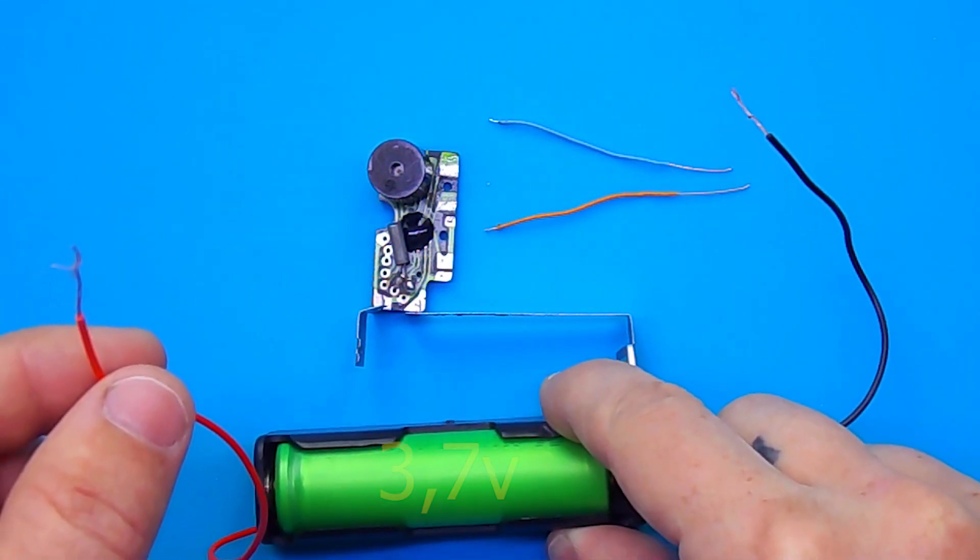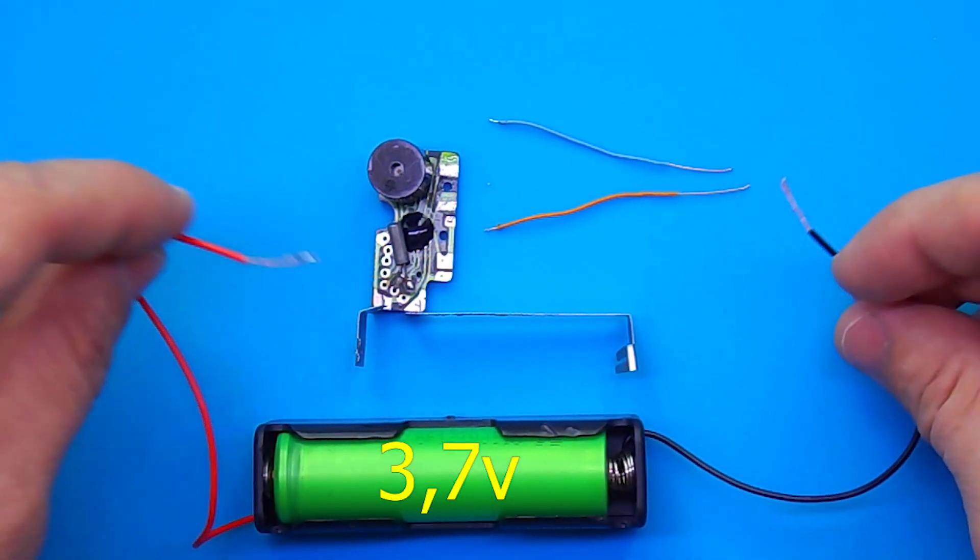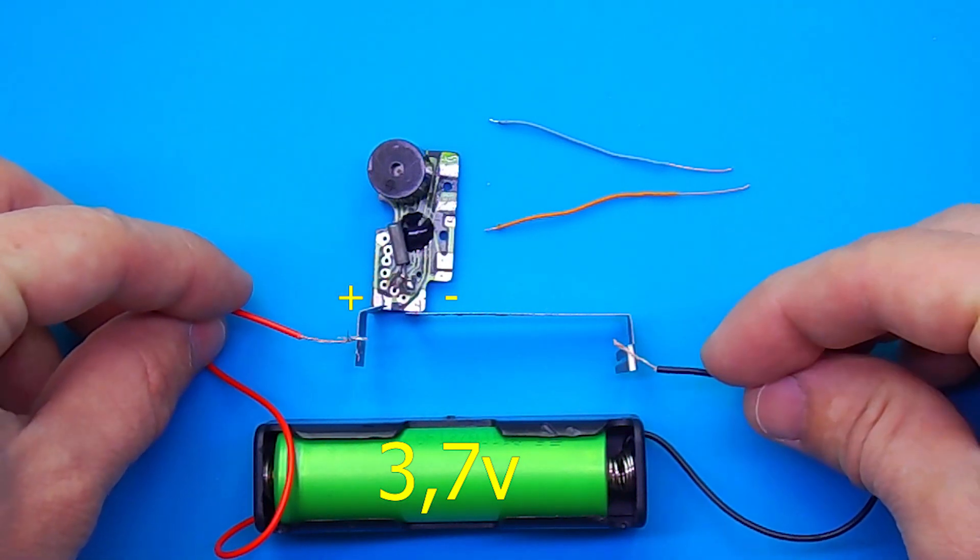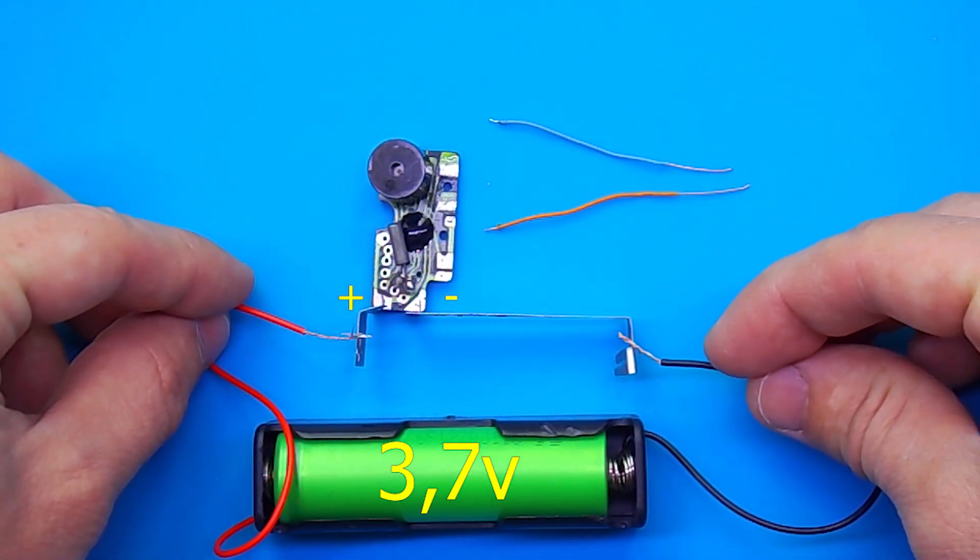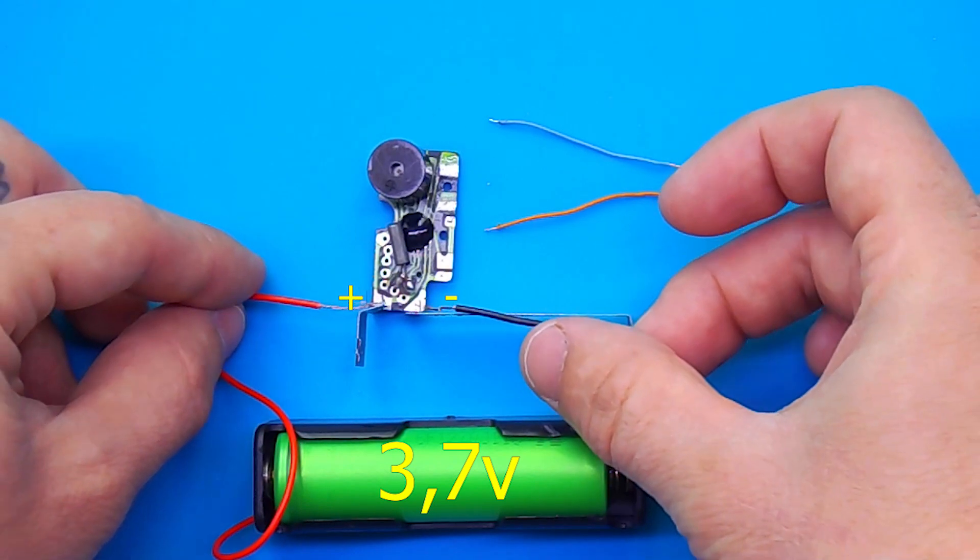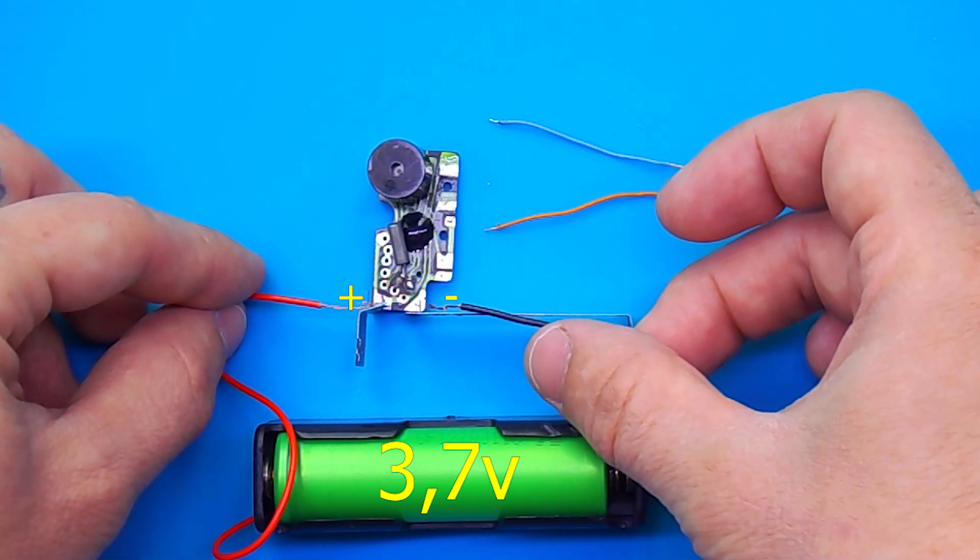A regular battery of 1.5V is no longer suitable here, therefore I will use a 4V lithium-ion battery. It is connected in the same way as a battery, with polarity plus and minus.